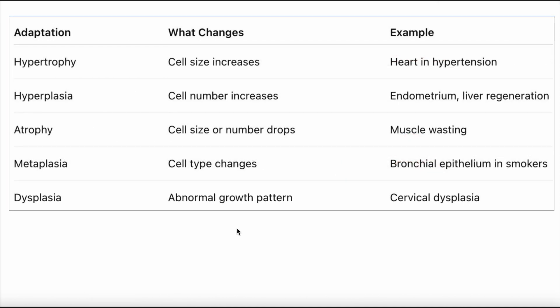In this slide, I'm bringing all of them together and we can have a review. We have hypertrophy, cell size increases. Example: heart in hypertension. Hyperplasia, cell number increases. Endometrium or liver regeneration. Atrophy, cell size and number drops. Muscle wasting. Metaplasia, cell type changes. Bronchial epithelium in smokers. Dysplasia, abnormal growth pattern. Cervical dysplasia. Thank you very much.